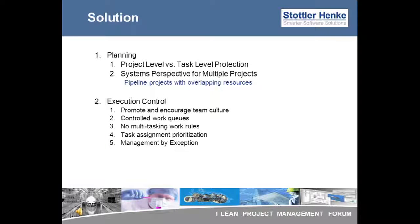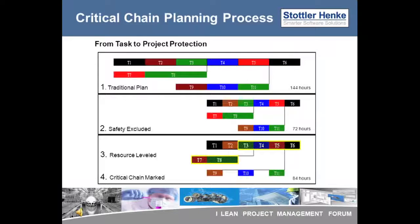Here we will examine how the aggregation of risk principle actually plays out in the critical chain planning process. We start with a traditional critical path plan. In these diagrams, each color represents a different skill category and there is quantity one of each skill category. The first step in the process is to exclude the built-in safety of all the task estimates. A simple rule of thumb is to cut the current task durations in half.